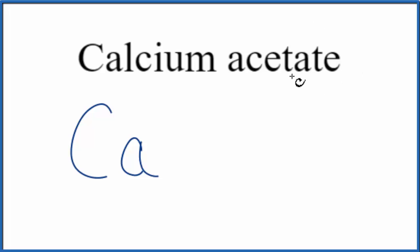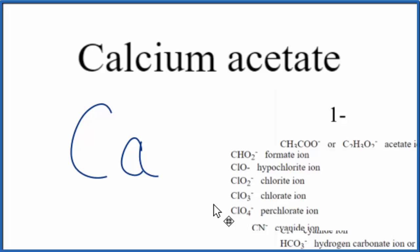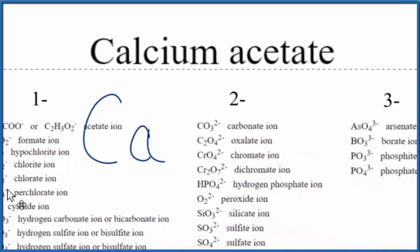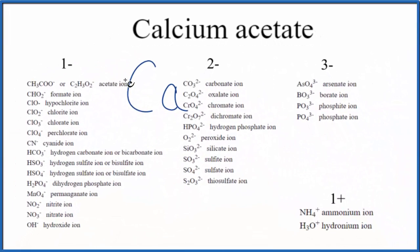We've either memorized that acetate is CH3COO-, or, if we're allowed, we can look it up on a table with ions. So, here's a table, and the acetate ion,